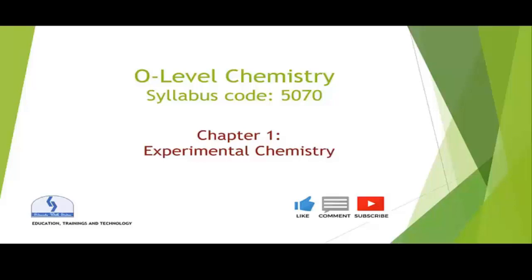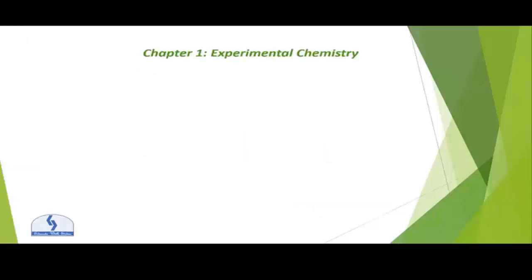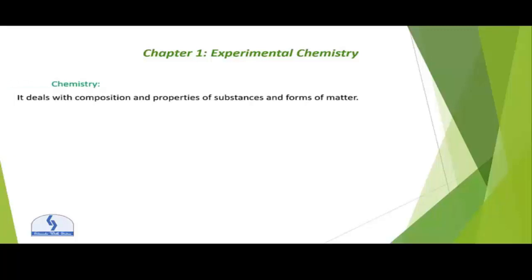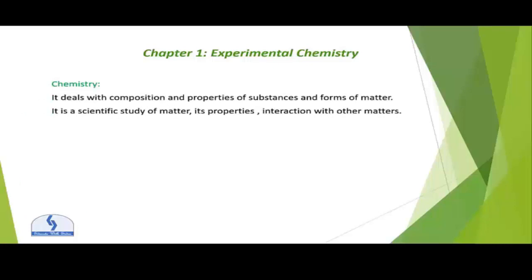Let us start the video. Chapter number one is Experimental Chemistry. We should know the terminologies. What is chemistry? It deals with the composition and properties of substances and forms of matter. It is a scientific study of matter, its properties, and interaction with other matter. What does experimental mean? It means that it is based on or derived from some experience or any experiment — any test, trial, or procedure.